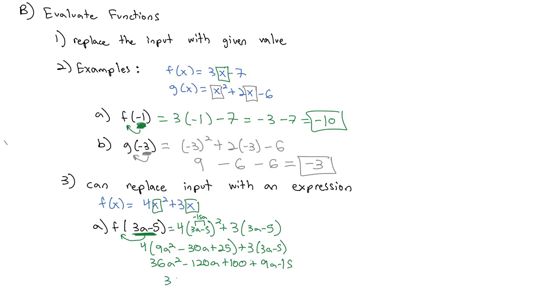Combining like terms, we've got 36a². Negative 120a plus 9a is -111a. And 100 - 15 is plus 85. We've evaluated our function at the point 3a - 5.